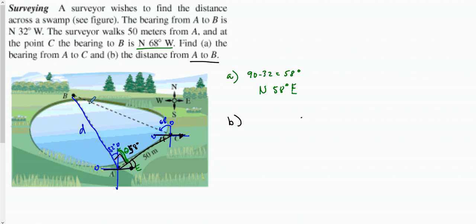Since these are 90 degrees, we're going to use alternate interior angles — alternate interior angles of parallel lines are equal. We know this is 68 degrees and the full bearing line is 90 degrees, so 90 minus 68 gives us that small angle of 22 degrees. Similarly, from the other side, 90 minus 58 gives us 32 degrees.